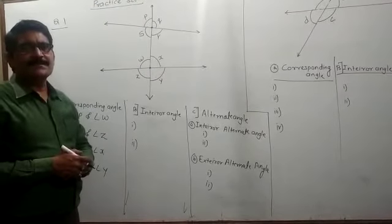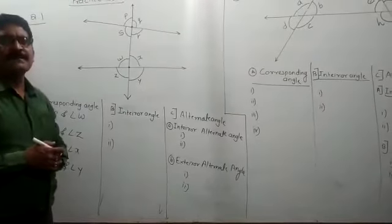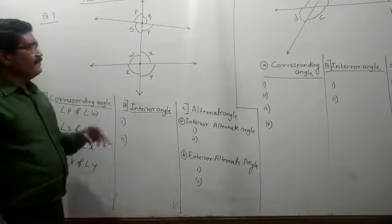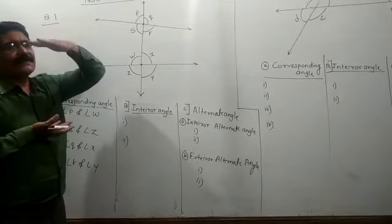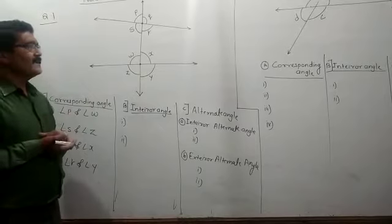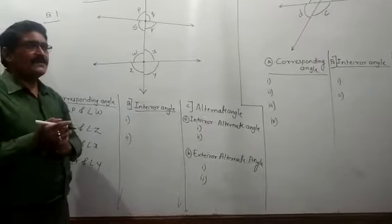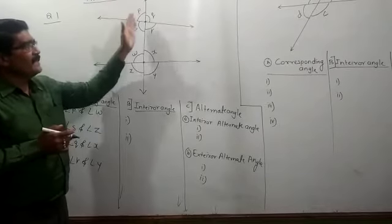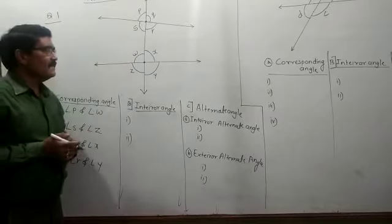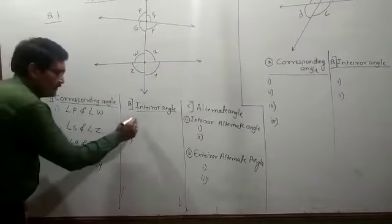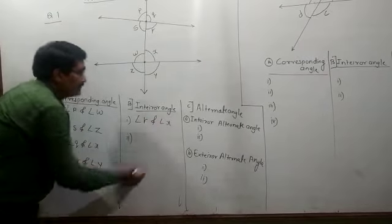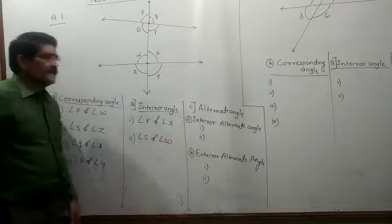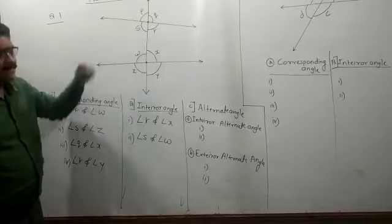You have to draw many diagrams like this, give different names to the angles, and find out the corresponding angles, alternate angles, and interior angles. Now let's identify the interior angles. Which angles form within the interior of the two lines with this transversal? Those angles are called interior angles. The interior angle pairs are angle R and angle X, and angle S and angle W.